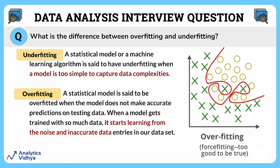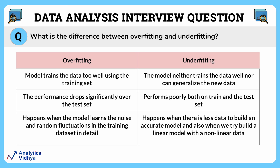A statistical model is said to be overfitted when the model does not make accurate predictions on the test data. When a model gets trained with too much data, it starts learning from the noise and inaccurate data entries in our dataset. Overfitting is like studying so much detail that you get confused and make mistakes. This table shows the differences between the two — overfitting and underfitting.